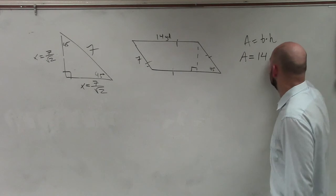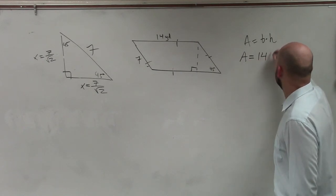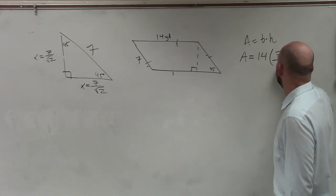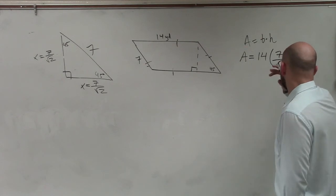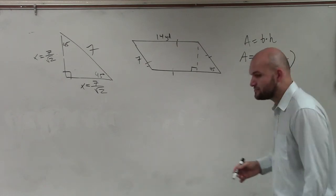So let's just do height as 7 divided by the square root of 2. And since we're finding the area,